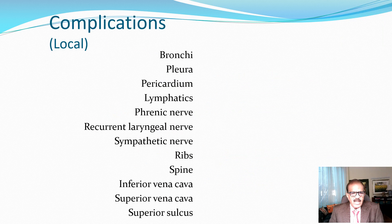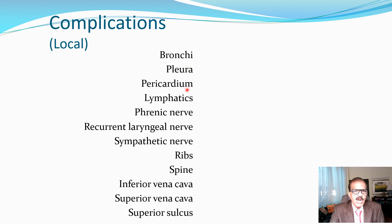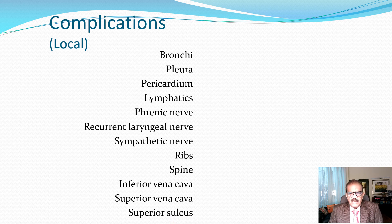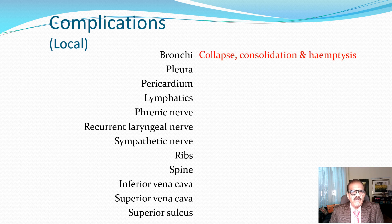For local complications, the key structures involved are: bronchi, pleura, pericardium, lymphatics, phrenic nerve, recurrent laryngeal nerve, sympathetic nerves, ribs, spine, inferior vena cava, superior vena cava, and superior sulcus. If the bronchi are involved, it could lead to collapse from bronchial obstruction, or cause secondary consolidation and hemoptysis. If it involves the pleura, it causes pleural effusion — usually large — with dyspnea, associated signs, and possible tracheal shift.